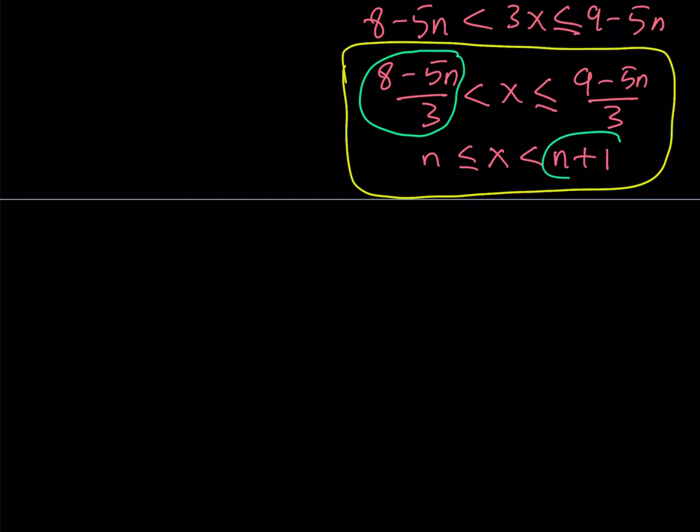For example, 8 minus 5n over 3 needs to be less than n plus 1, right? If you multiply both sides by 3, you get the following. And I'm putting n's on the same side. 8n is greater than 5. And n is greater than 5 eighths. So that's one of the inequalities solved.